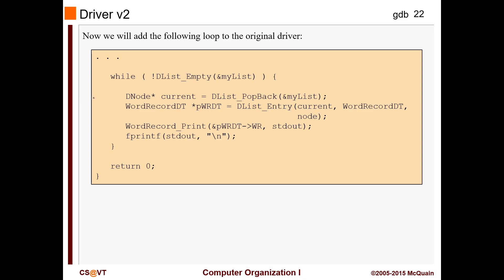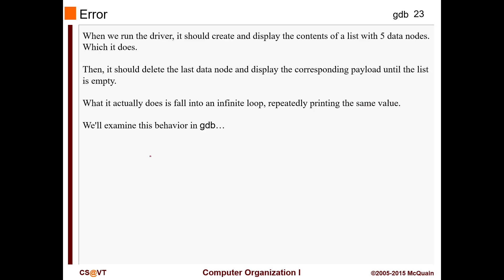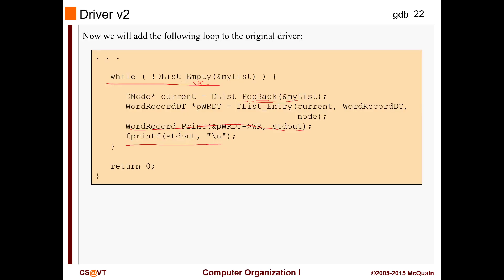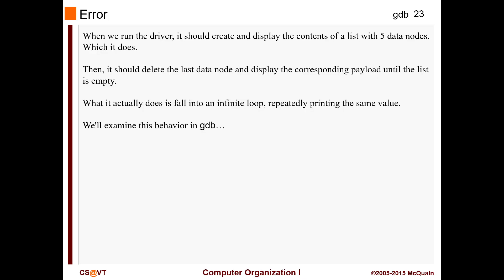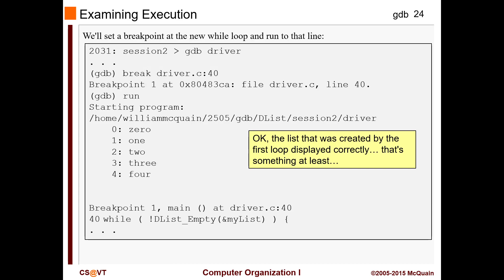We are going to take a look at another driver, but this time there might be an error. We run a while loop: while the list is not empty we keep popping it, print whatever we popped, print a new line - pretty straightforward. We added five nodes, so after five nodes it should stop. But what happens is it goes into an infinite loop. Let's see how to tackle that.